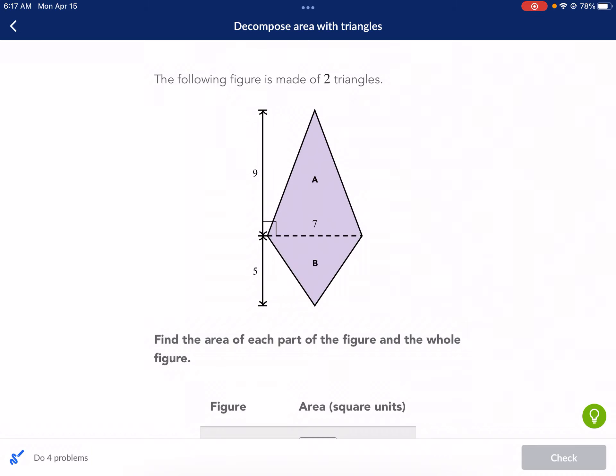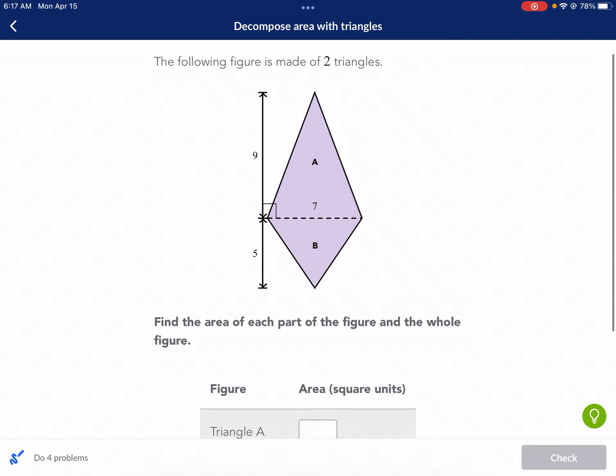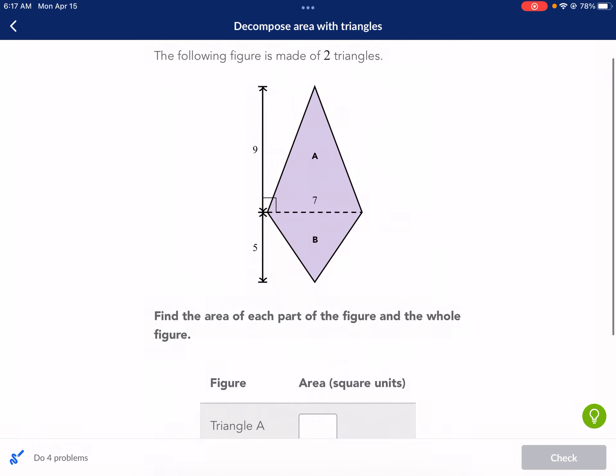Hi, this is Mr. West and today we're going to be doing a Khan Academy tutorial on decomposed area with triangles. This one has been giving my students a little bit of fits, so let's go ahead and break down how to do this. Each one of these shapes is going to be a composite figure, which means composed of more than one shape.